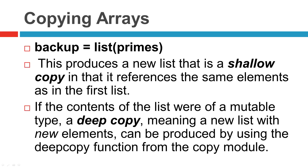The same semantics apply when making a copy of an existing list. If you write backup = list(primes), you're producing a new list that is a shallow copy — it references all the same elements as the first list. You're not actually duplicating those original objects; you're just duplicating a list that references those same objects. If you want a truly independent copy with new elements (useful when elements are mutable), you can use the deepcopy function from Python's copy module.